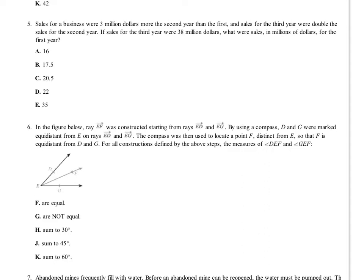So here we go. I'm going to use a highlighter, try to move a little bit quickly and carefully. Sales for a business were $3 million more in the second year than the first. Okay, so if you had zero in the first, that's $3 million in the second. The sales for the third year were double that for what the sales were for the second year. Okay, if the third year sales were $38 million, what were the sales in millions for the first year?